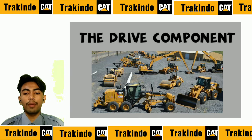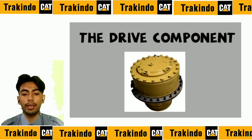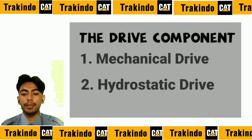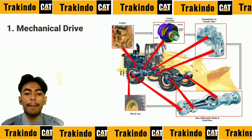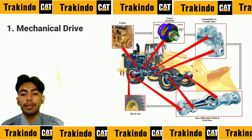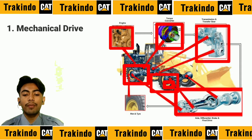The drive power of wheel loaders is obtained from the engine, which is transmitted through a series of final drive components. There are two drive systems on wheel loaders: first, the mechanical drivetrain, and second, the hydrostatic drivetrain. In a system that uses a mechanical drivetrain, the components are: one — engine; two — torque converter; three — transmission; four — axle; five — brake; six — final drive; and seven — rim and tire.